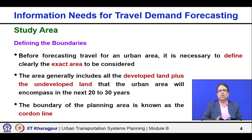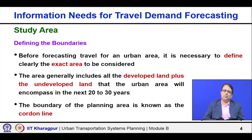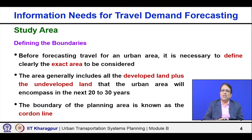What should this area include? Generally, it must include the area which is presently developed — wherever people are living now, where intense land activities are going on, where commercial areas are there. The presently developed area obviously will be included. But remember, we are doing this transportation planning keeping the next 20 years or more in mind. So if we consider only the presently developed area, it is not adequate. We also have to consider areas likely to be developed within the next 20 to 30 years.